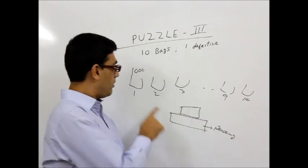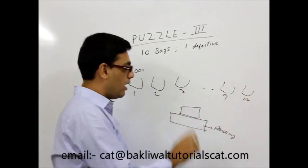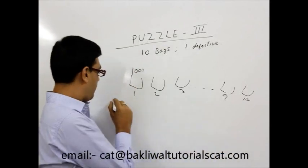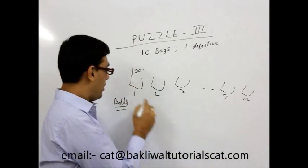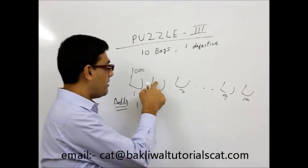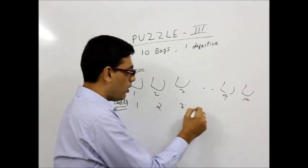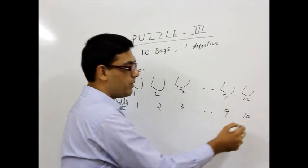What we do is, we number the bags. Bag 1, bag 2, bag 3, bag 4, bag 10. Now what we do is, we take out balls from each bag. From the 1st bag, we take out 1 ball. From the 2nd bag, we take out 2 balls. From the 3rd, 3 balls and so on. 9 from the 9th bag and 10 balls from the 10th bag.